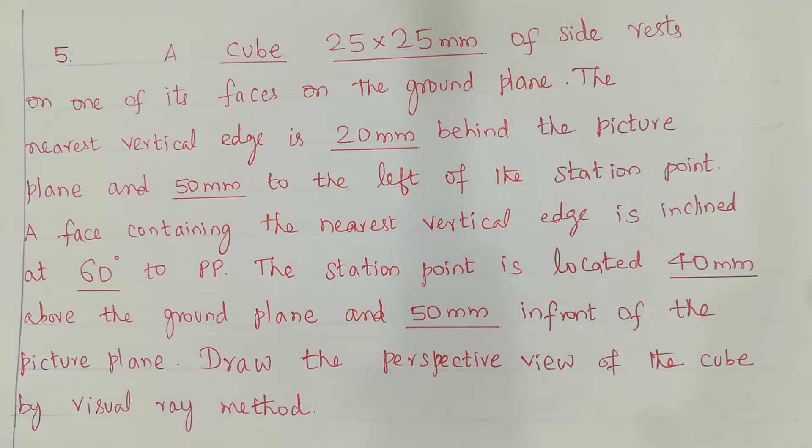A face containing the nearest vertical edge is inclined at 60 degrees to PP. The station point is located 40 mm above the ground plane and 50 mm in front of the picture plane. Draw the perspective view of the cube by visual ray method.